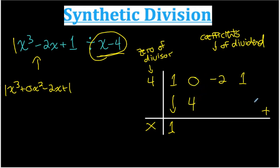Then I add. So I do 0 plus 4, that's 4. Then I repeat, do the multiplication again. 4 times 4, that's 16.